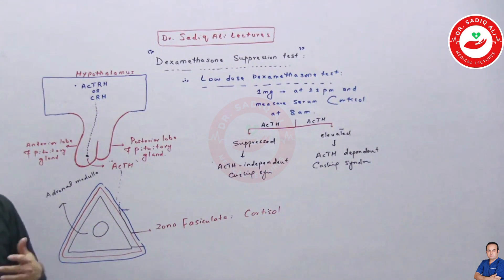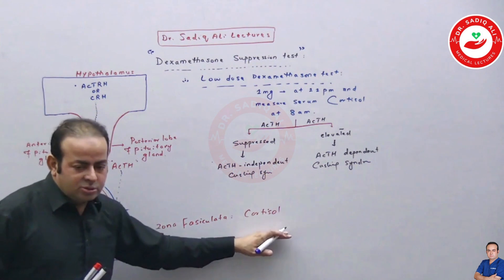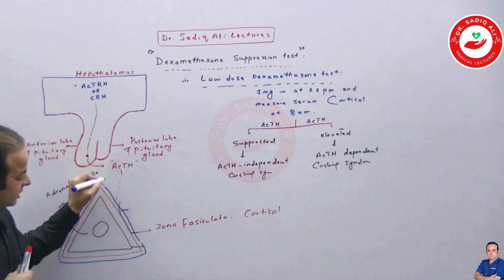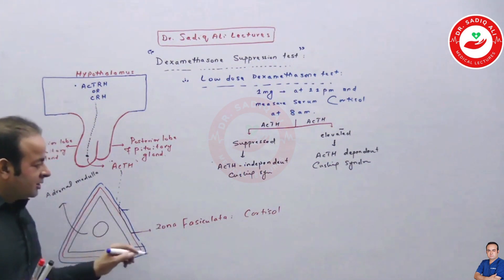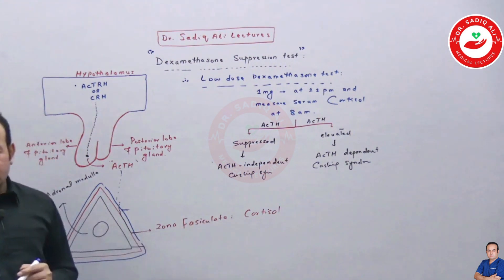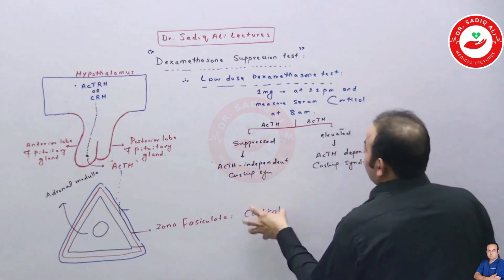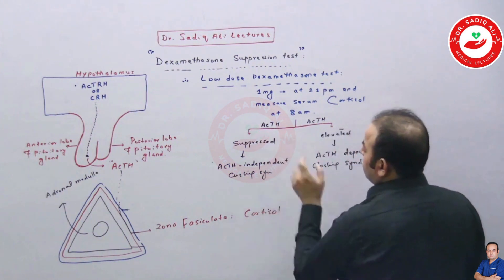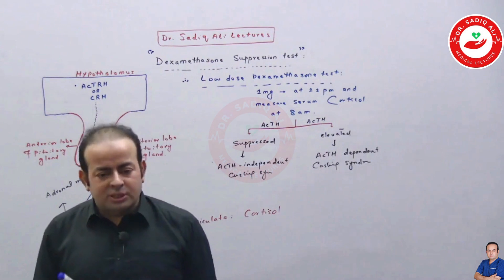To clarify: if the problem lies in the adrenal gland itself — for example, the zona fasciculata increasing cortisol — that is called Cushing syndrome (primary). If the problem is in the pituitary releasing excess ACTH, which then increases cortisol, that is called Cushing disease. Low dose dexamethasone suppressing ACTH means the cortisol rise is not ACTH-dependent — it could be iatrogenic, exogenous glucocorticoid, or primary adrenal.